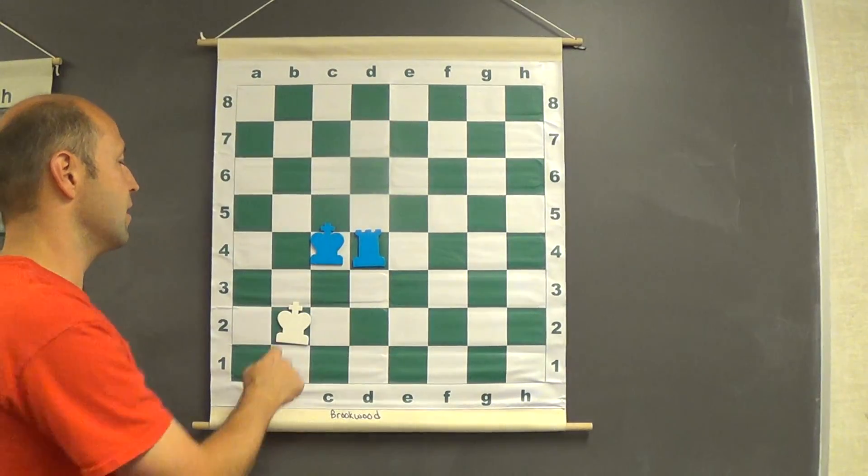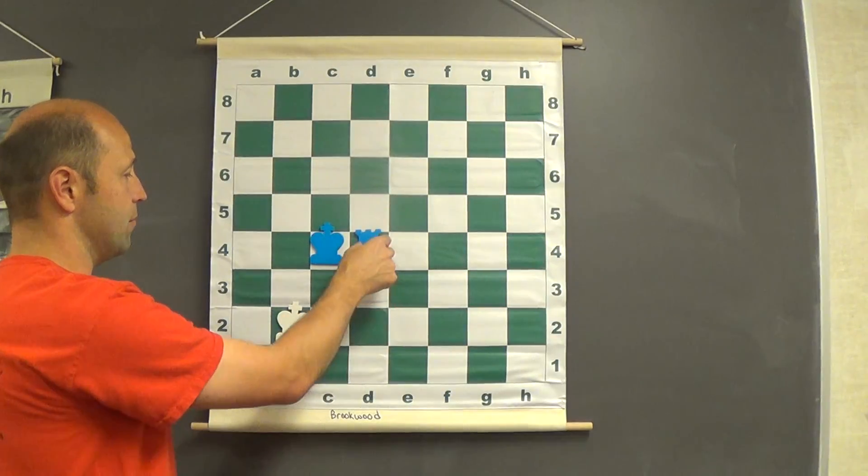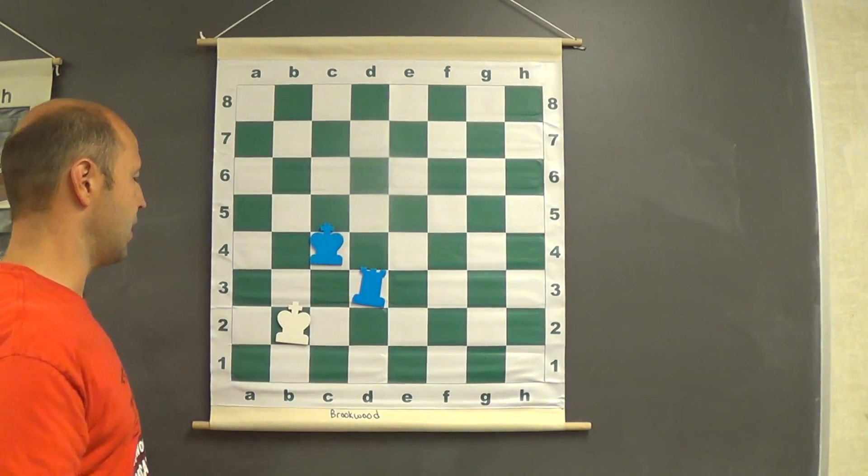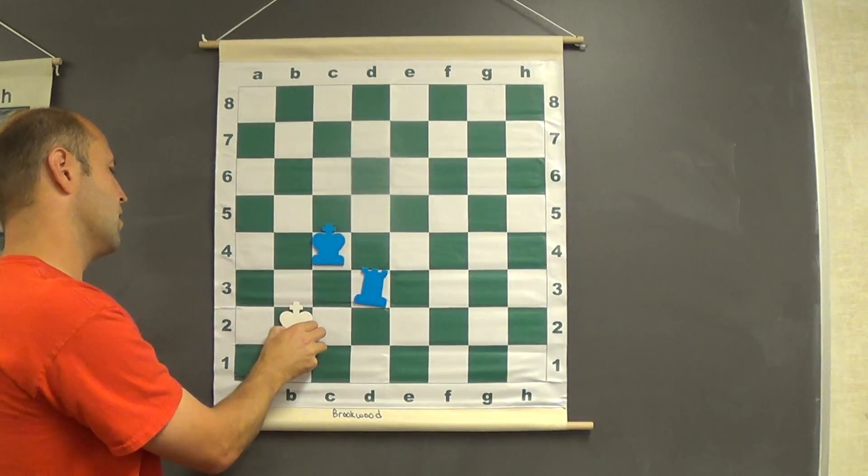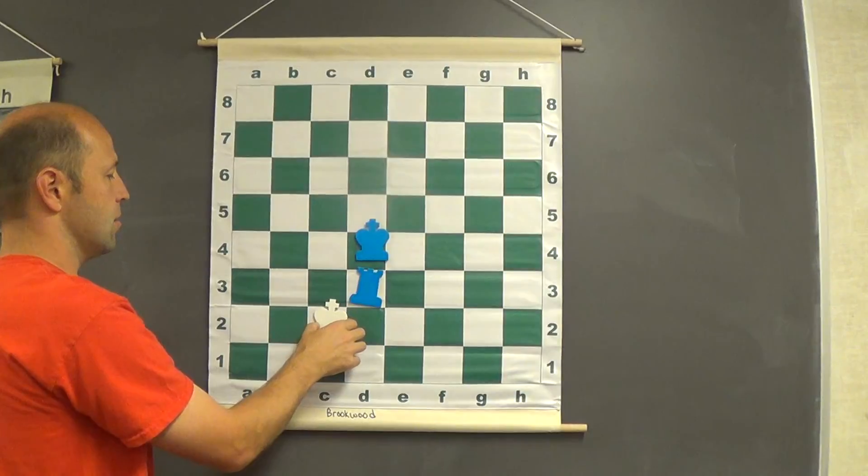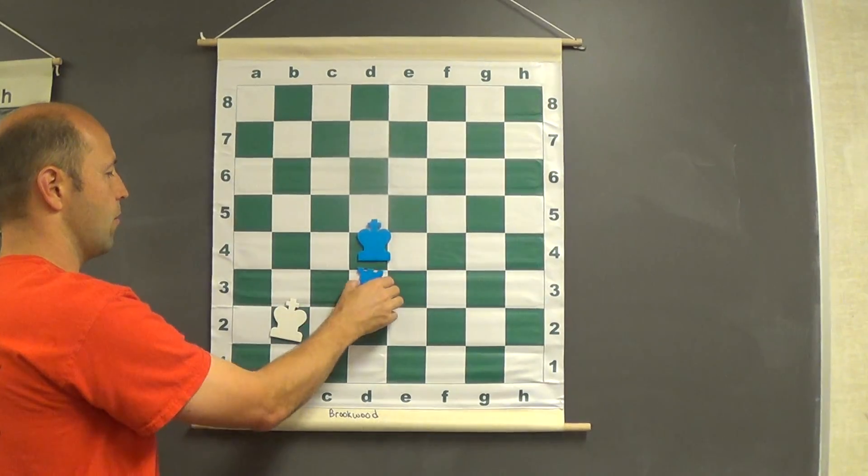Often black makes a mistake. If black makes a mistake, I'll show you what happens in a second. Black goes ahead and makes the box smaller. Now we're down to a box of six. Comes over and tries to attack the rook again. We just stay together as buddies. He moves over. Now we're in a box of four.